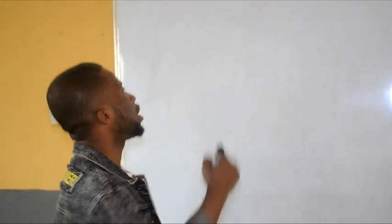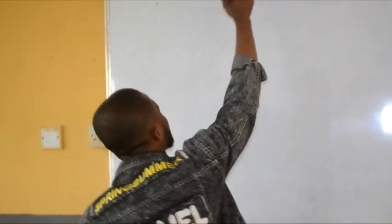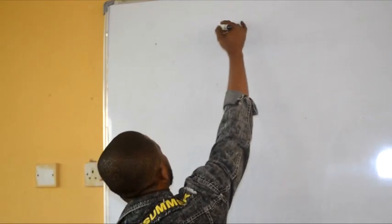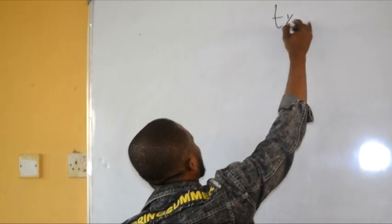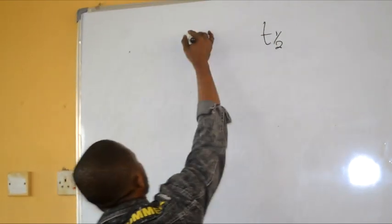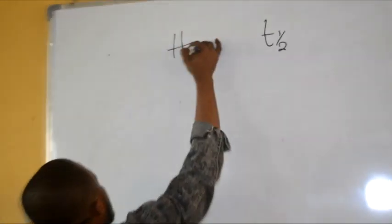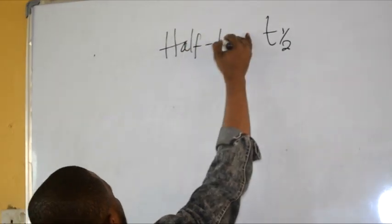What is half-life? Half-life is defined as the time taken for a radioactive isotope to reduce to half of its size. It is symbolized as T-half, or half-life.